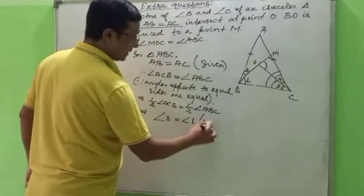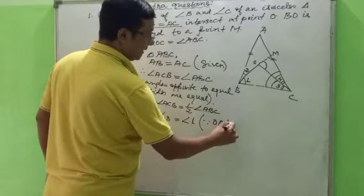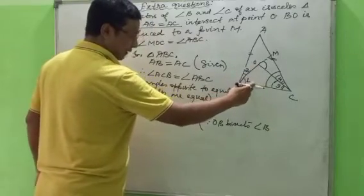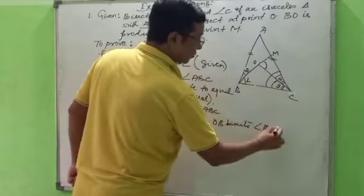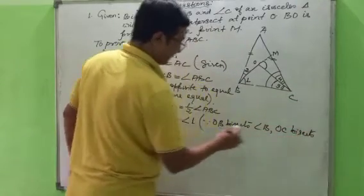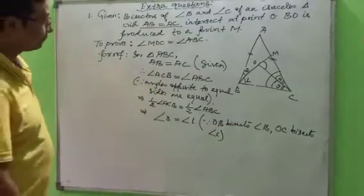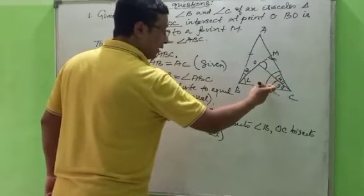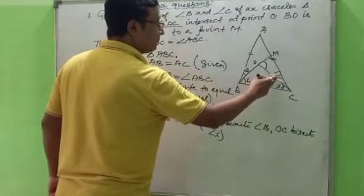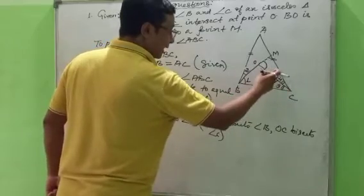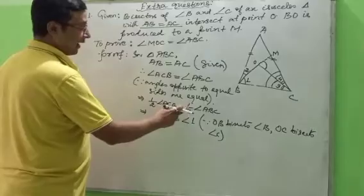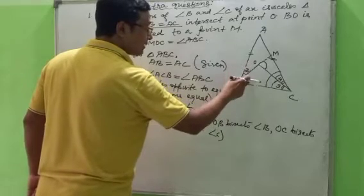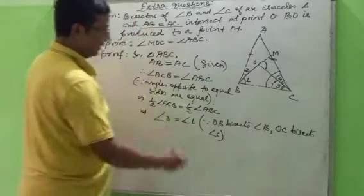Since OB bisects angle B and OC bisects angle C — that is why half of angle C is angle 3, because OC bisects angle C, so these two angles are equal. Half of angle B is angle 1, because OB bisects angle B. Angle 3 equals angle 1.